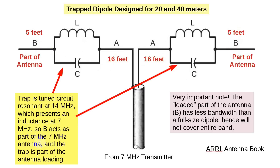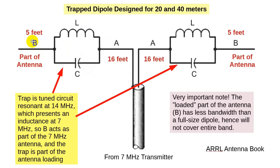If we switch to 7 MHz, we still have our 16 feet on the A's on either side, but the trap is no longer a tuned circuit at that lower frequency. The L swamps the C — it acts inductively, like loading for the remaining part of the antenna. If you add it all up, you've got 32 plus 5 plus 5, equaling 42 feet for the whole antenna, which resonates on 40 meters.